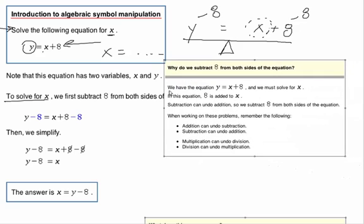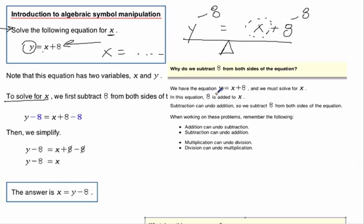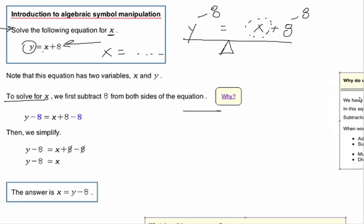This explains why we want to get the x all by itself. We can subtract or undo from both sides. Addition can undo subtraction. Subtraction can undo addition. Multiplication undoes division, and division undoes multiplication. Those are pretty important things to recognize.